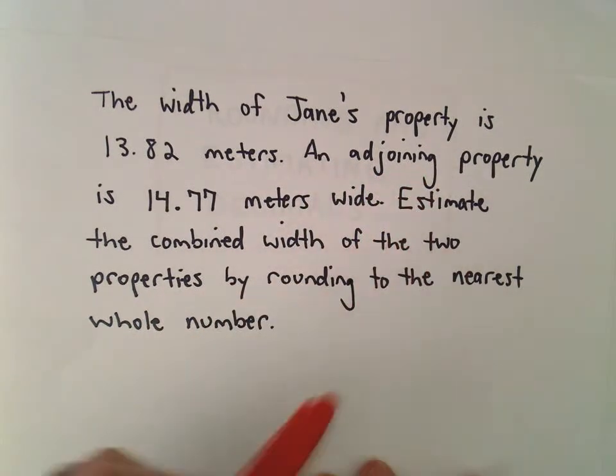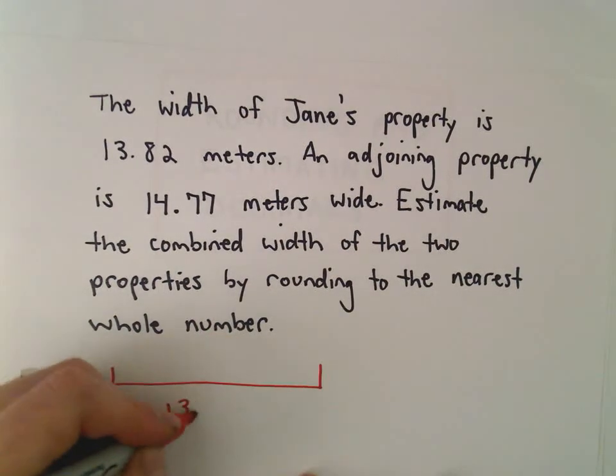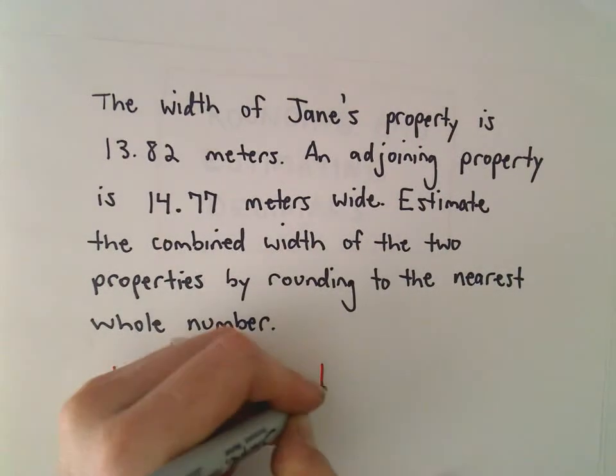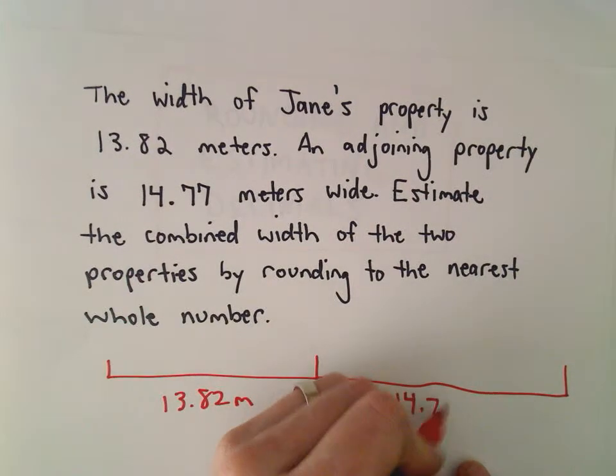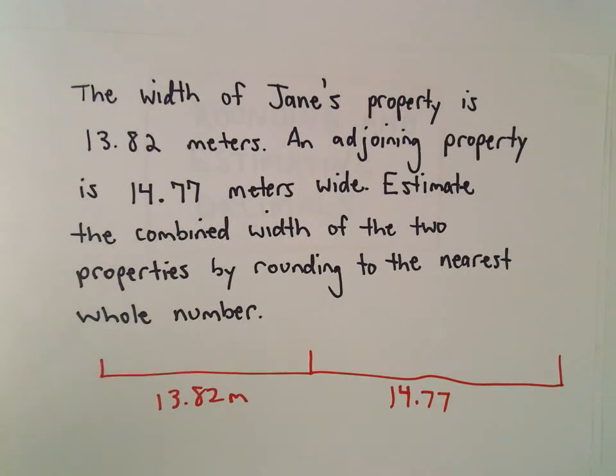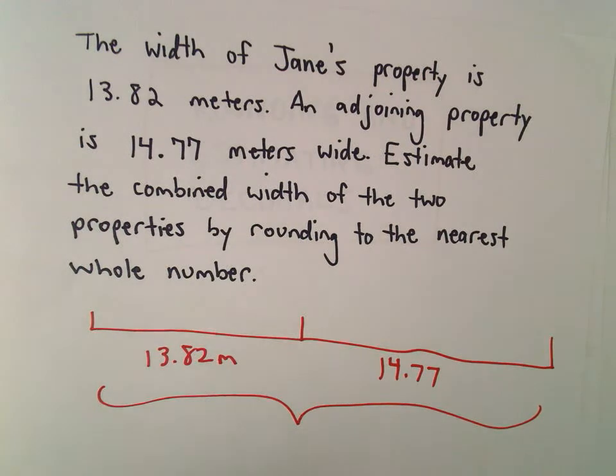adjoining property, the property exactly next door. So here's our 13.82 meters, the property exactly next door is exactly 14.77 meters wide. We want to estimate the combined width, so we want to estimate this entire width just by rounding.